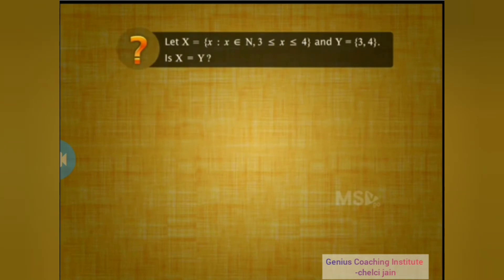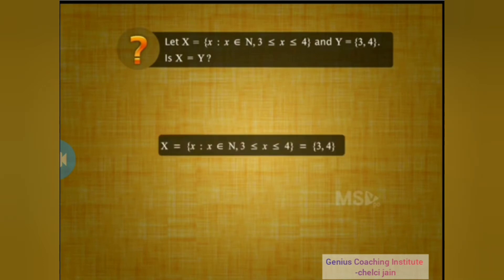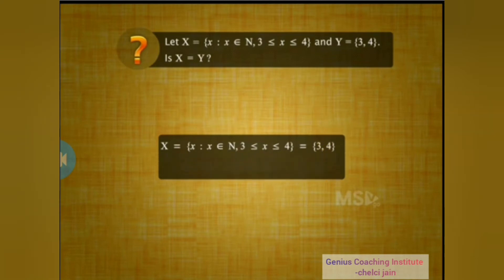Now we have two sets, set X in set builder form and set Y in roster form. Are both sets equal? Set X consists of natural numbers from 3 to 4, meaning set X has only 3 and 4 as its elements. Also, set Y has 3 and 4 as its elements. All elements of set X are in set Y and all elements of set Y are in set X — so we can say that set X is equal to set Y.